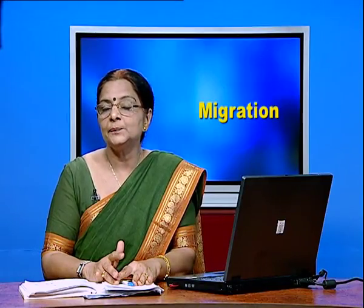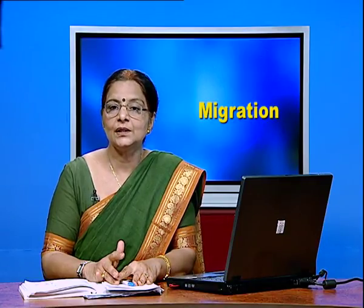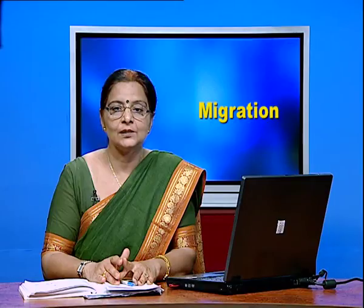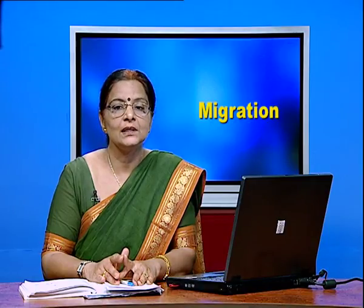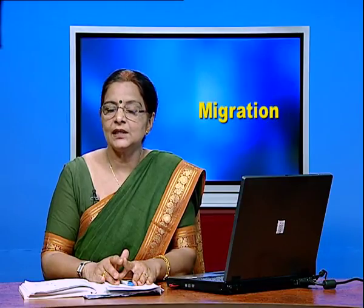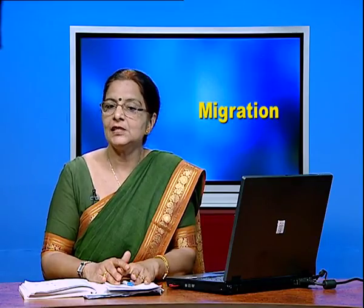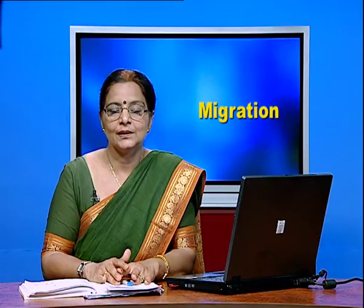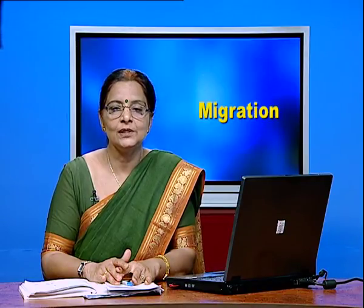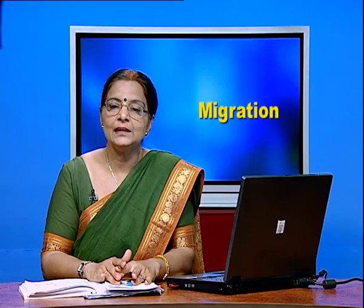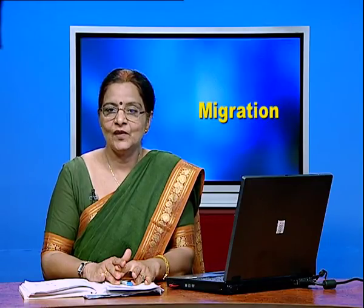We have taken up the first part of the chapter covering what migration is and the types of migration — including international migration as well as internal migration. We also covered the streams of migration defined as short-distance and long-distance migration, with intrastate and interstate types. It must now be clear why females migrate short distances and why males migrate long distances. Thank you very much.